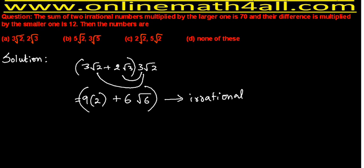Let's analyze why Option A fails. The two irrational numbers 3√2 and 2√3 are unlike radicals — the first has the number 2 under the radical and the second has the number 3. If both radicals had the same number, they would be like radicals. Because these are unlike radicals, when we find the sum of two irrational unlike radicals and multiply by the larger one, the result will always be irrational.